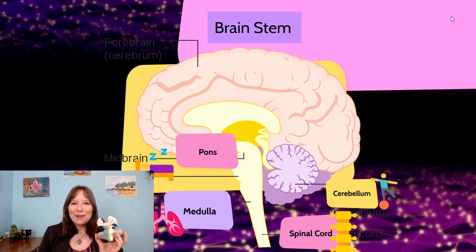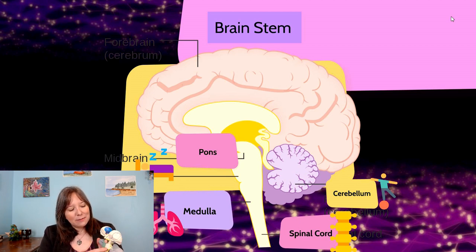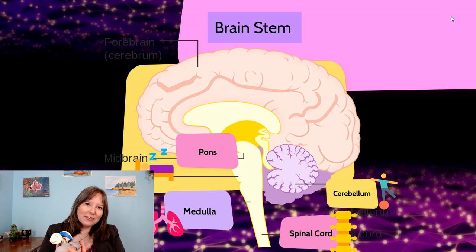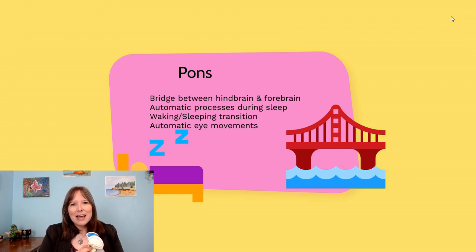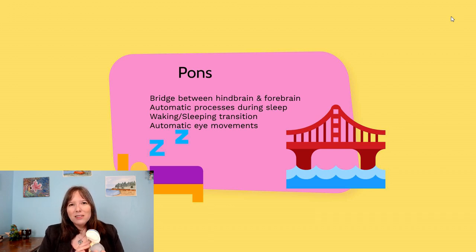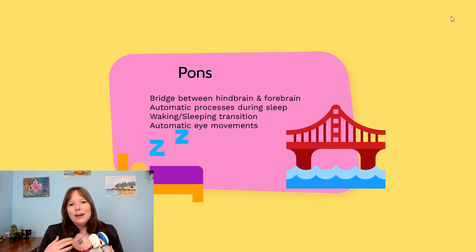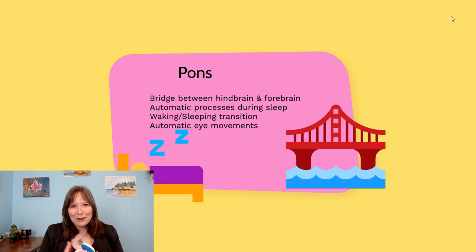Now let's talk about the final part of the brain: the brain stem. At the top of the brain stem we find the pons, and below that the medulla. At the back is the large area called the cerebellum. The pons is mainly considered the bridge between the forebrain and the hindbrain — it contains a lot of connectivity tissue between the cerebrum and the limbic system down to the peripheral nervous system. The pons is where many automatic processes take place, things we're often not conscious of, like sleeping and waking up.